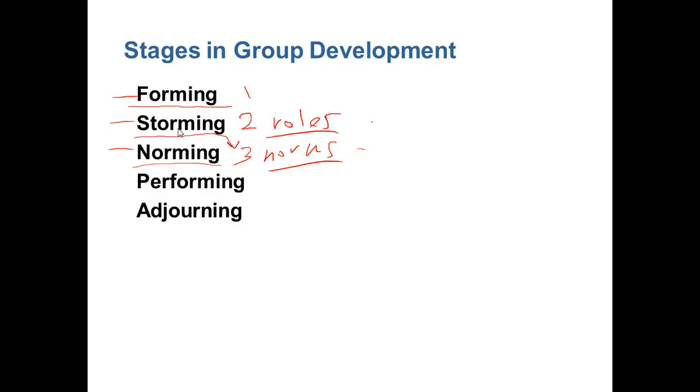So when forming, storming, and norming are completed, then we can start performing, doing the actual work itself. And then finally, if it's been a short-term group, a temporary group, when it's all done, we adjourn. And groups often have some sort of event that gives them closure when the group is done. If it hasn't been an enjoyable experience, obviously people most likely go their own way. But if it has been a good experience, some kind of final event, a little party or something to give closure to the group.